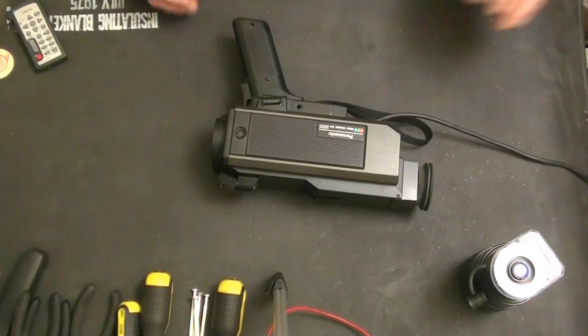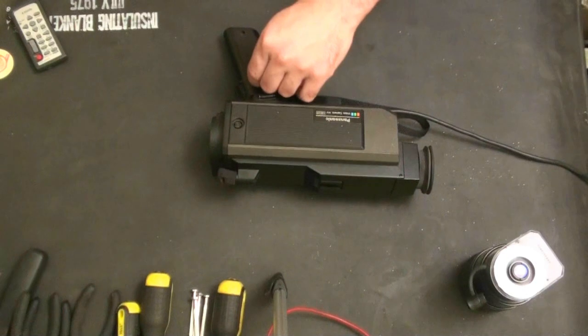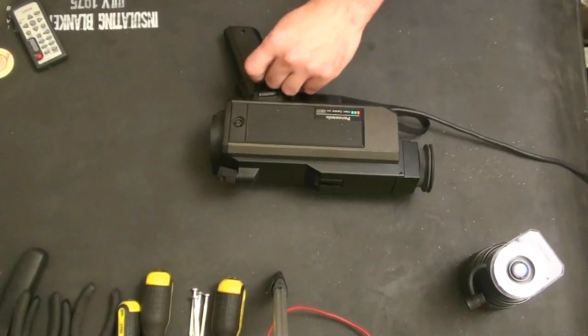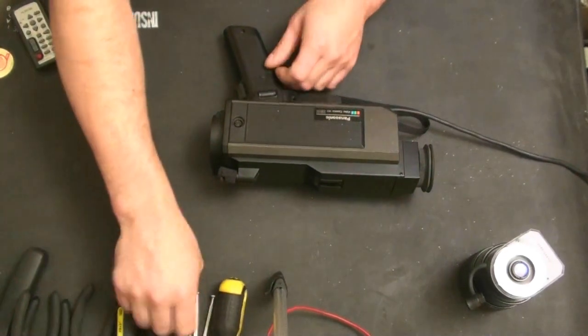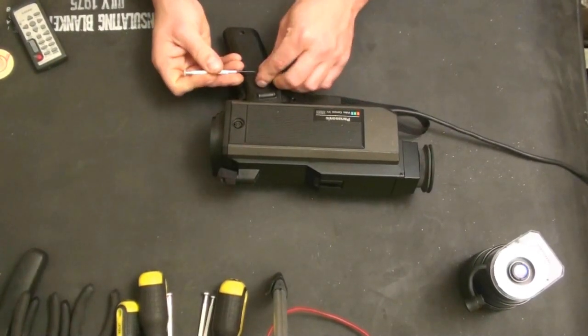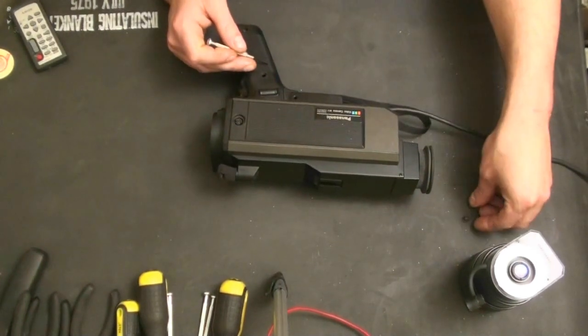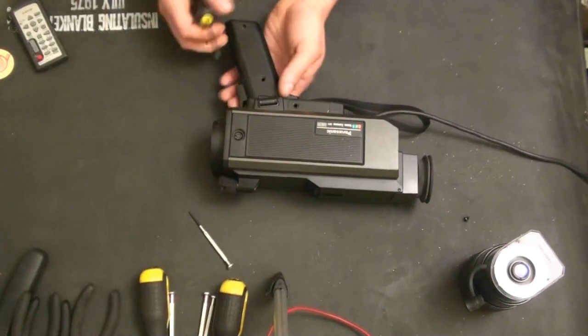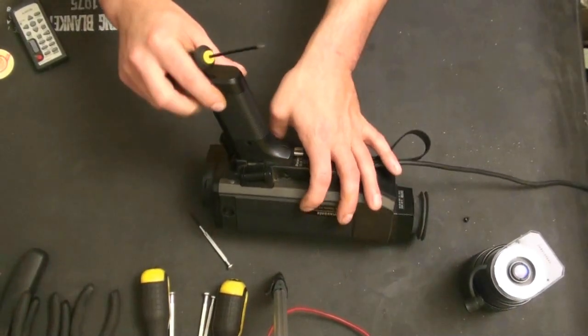And now there's a little rubber cap here in the handle. Let's see if we can get that out. It covers a screw. Okay, and we're going to take the handle apart.